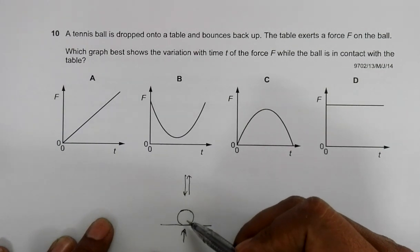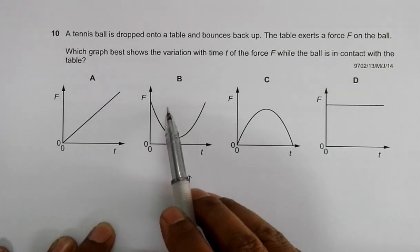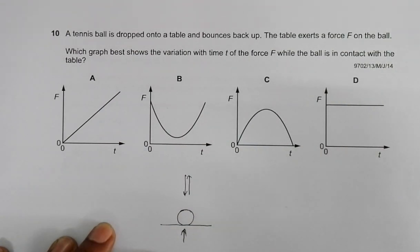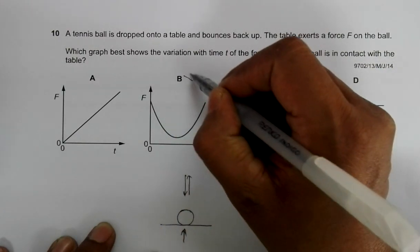Initially the force should be zero because it has just started. That's why initial zero means that choices B and D are disqualified, because they show the initial force is something other than zero.